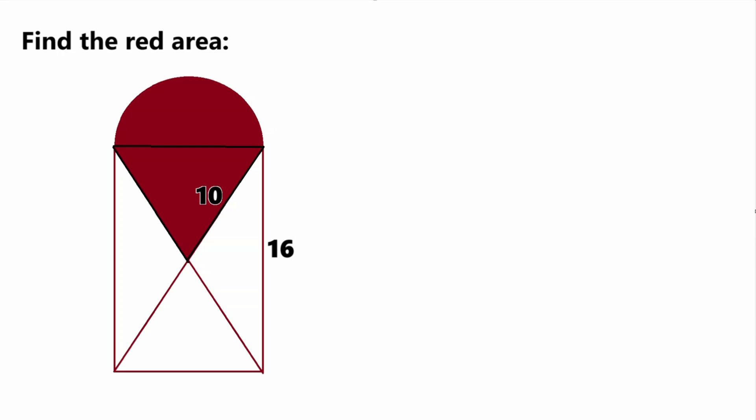Hello everybody and welcome back to another math learning video. Today I brought you guys a geometry problem where we have to find this red area of this figure here. So what is this figure? We have a rectangle here and a semicircle attached. This rectangle has already been split up into four triangles. One side length of the triangle here is 10, and this side length of the rectangle is equal to 16. We need to find the red area. So let's go ahead and get started.